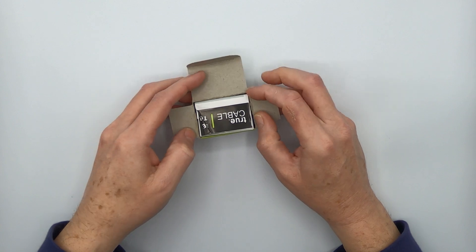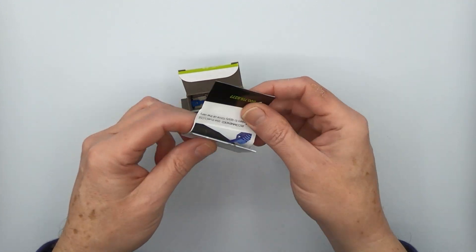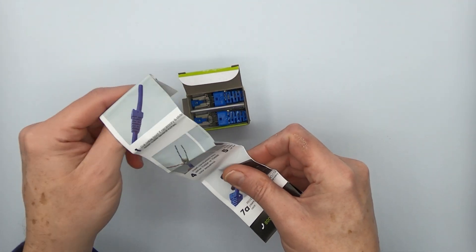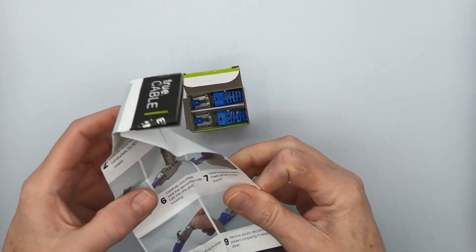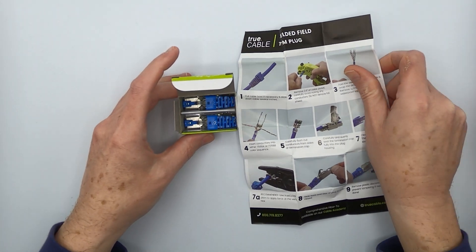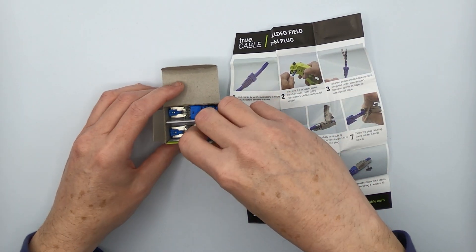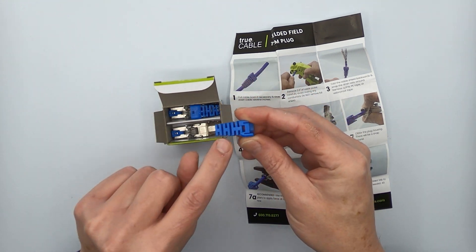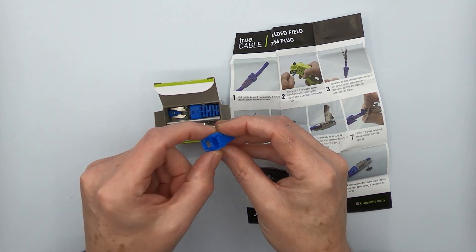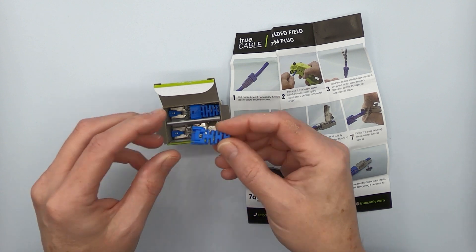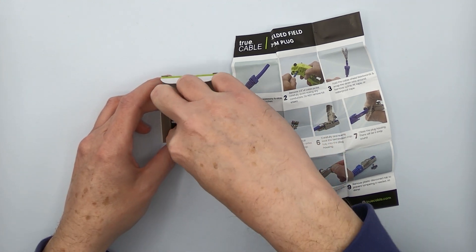This is a two-pack, and they do come in multiple pack sizes. We've got some nice fold-out instructions here. And then inside the box, we have cut-to-fit strain relief boots that also lock the plug closed. So zip ties are not necessary with these particular plugs.